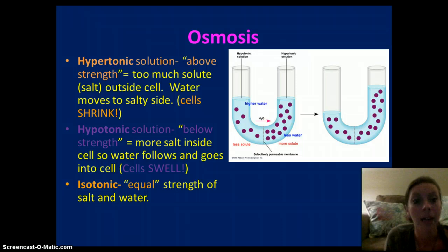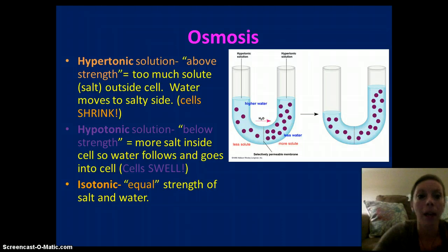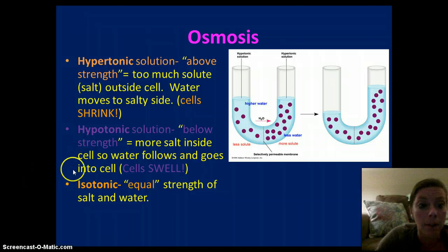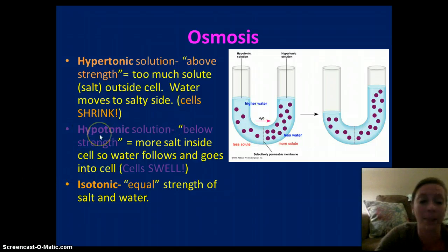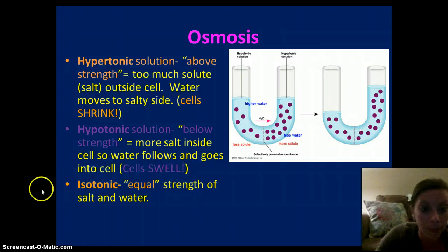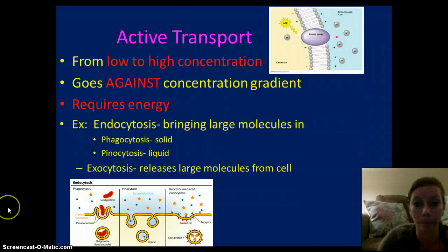Hypotonic is below strength — the cell will swell. I remember this by: hypertonic — if you're hyper, you move around a lot, so you're skinny. If you are hypotonic, it reminds me of a hippo — hippos are a big animal, so they swell. Isotonic will be equal.